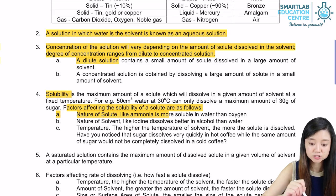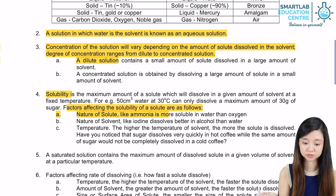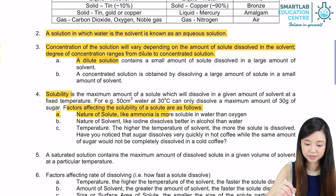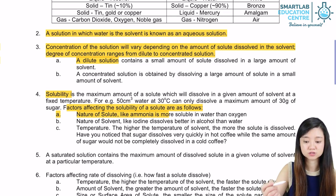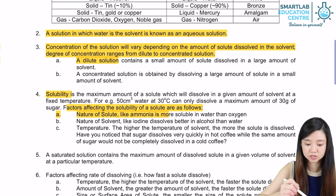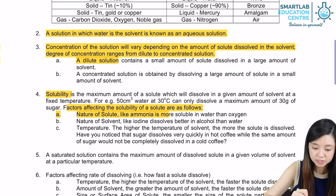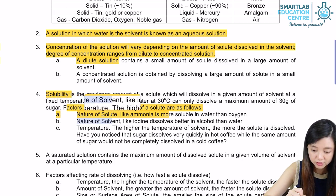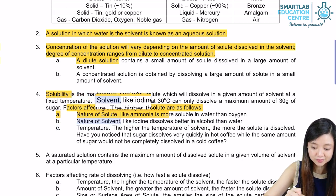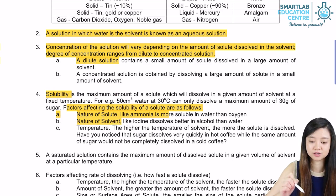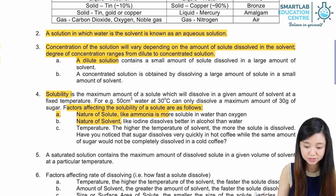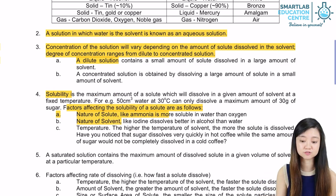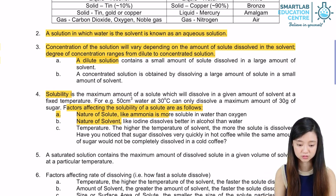Firstly, the nature of solute is important. For example, ammonia is actually more soluble in water than oxygen. The nature of the solvent is also important. For example, iodine actually dissolves better in alcohol than in water.